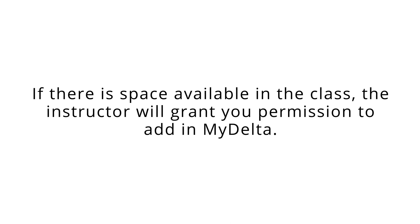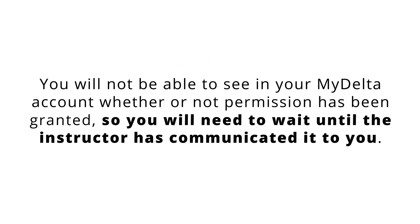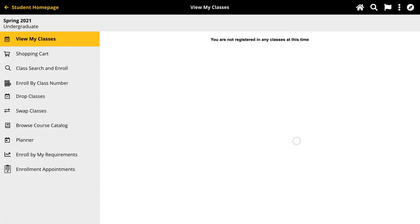The instructor will determine if there is space available in the class. If there is, they will grant you permission to add in MyDelta. You will not be able to see in your MyDelta account whether or not permission has been granted, so you will need to wait until the instructor has communicated it to you. Once they have, return to MyDelta and add the class as you normally would during open enrollment.